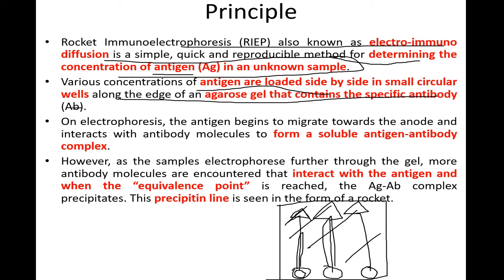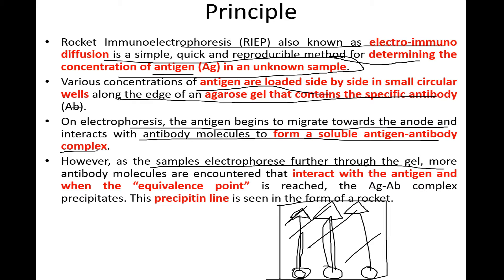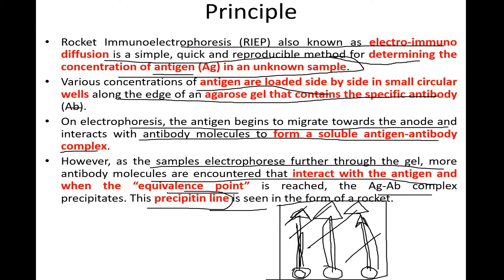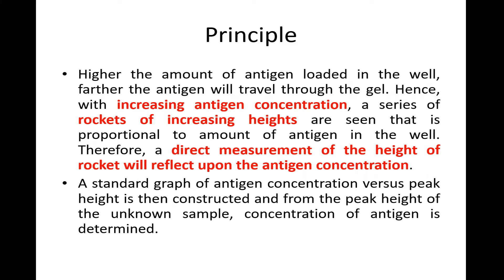On electrophoresis, the antigen begins to migrate towards the anode and interacts with antibody molecules to form a soluble antigen-antibody complex. As the sample electrophoreses further through the gel, more antibody molecules are encountered. When the equivalence point is reached, the antigen-antibody complex precipitates and a line is seen in the form of a rocket or precipitating line.